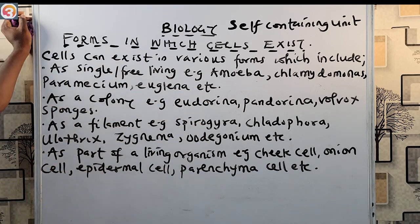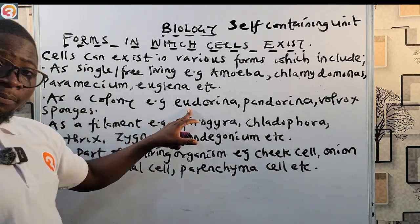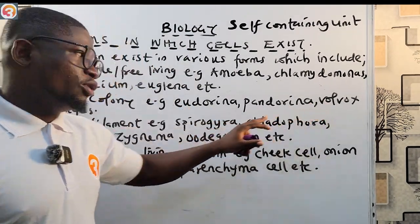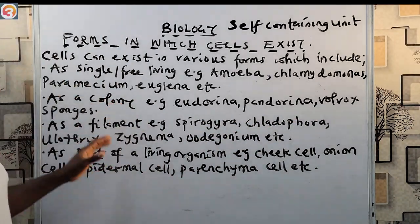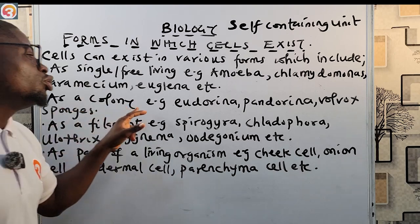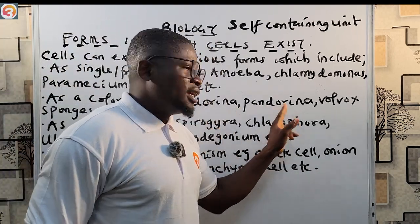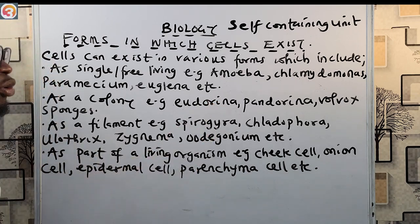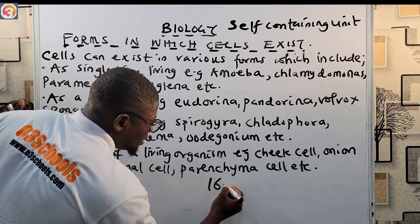The second form is as a colony. Examples of colonial organisms include Eudorina, Pandorina, Volvox, and sponges.